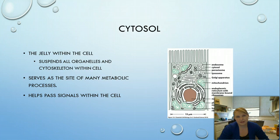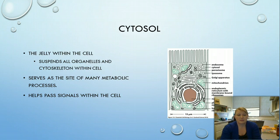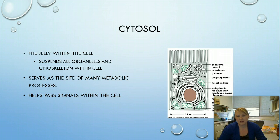Our first compartment is the cytosol. Remember, the cytoplasm refers to the jelly plus everything suspended in it, while the cytosol is just the jelly that suspends organelles and the cytoskeleton. It serves as a site for many metabolic processes and helps pass signals — it's a big messenger system that allows for transport and many other events to occur. Without the cytosol we wouldn't be able to as easily pass signals or transport items throughout the cell.